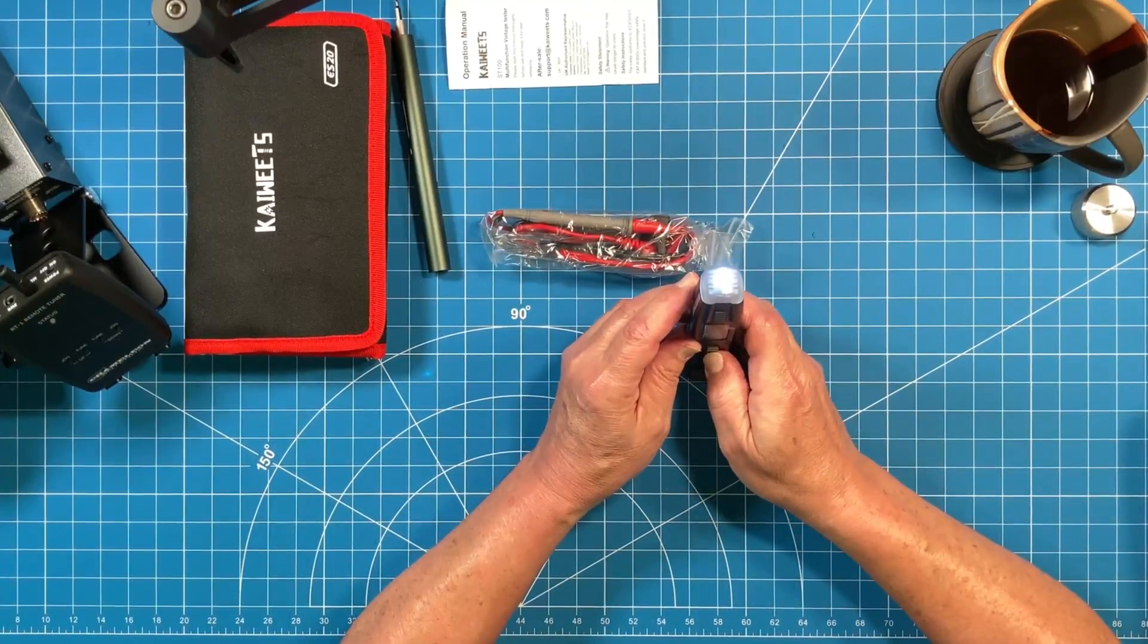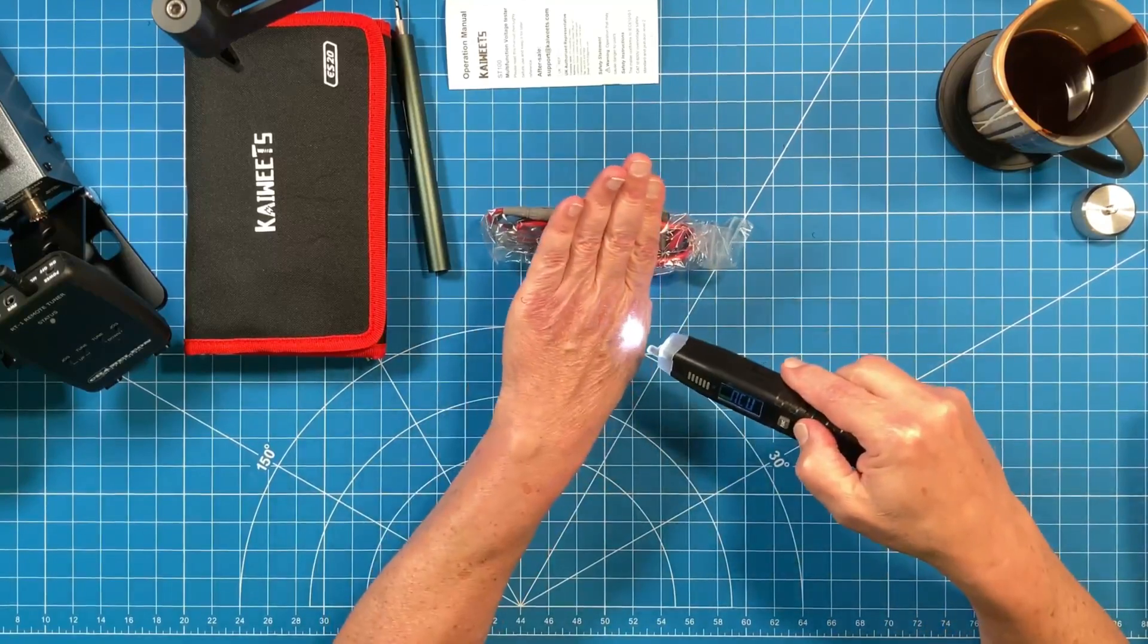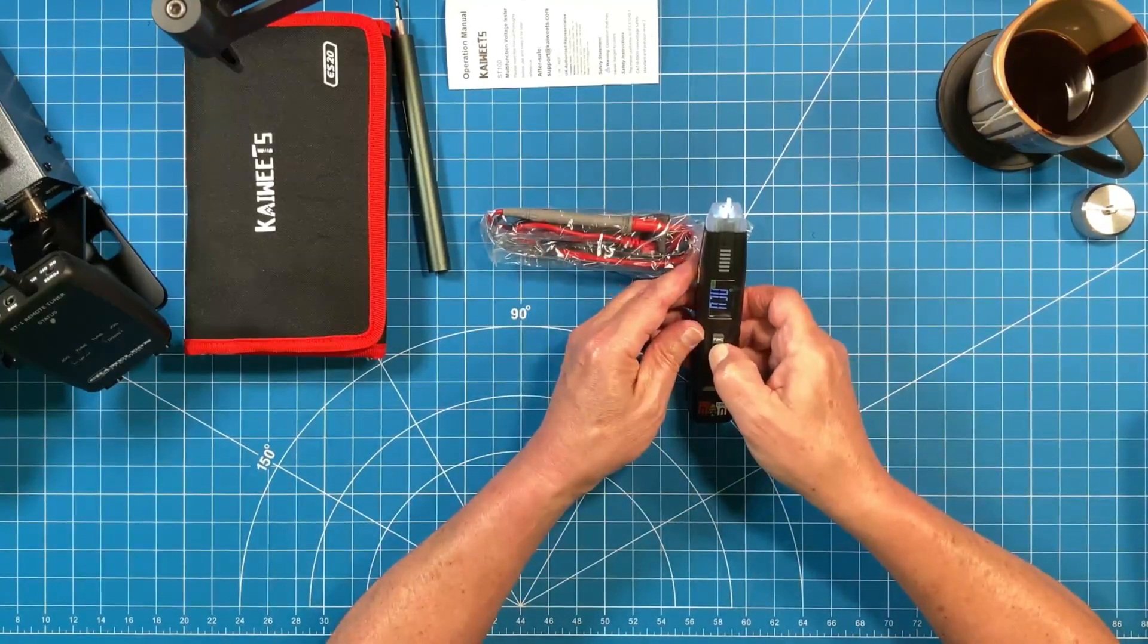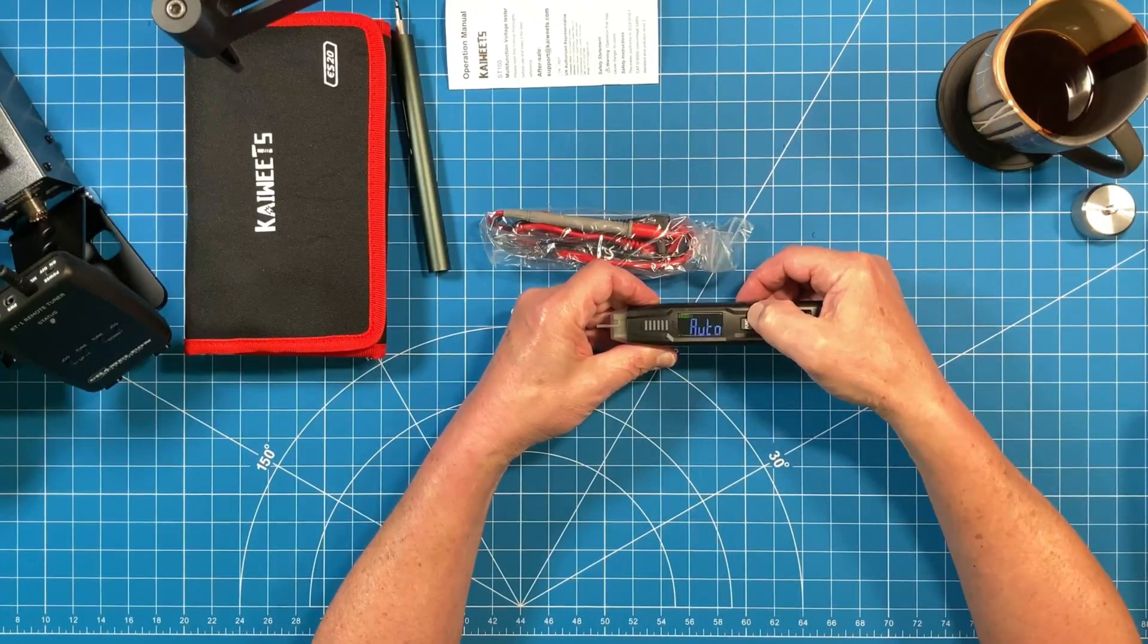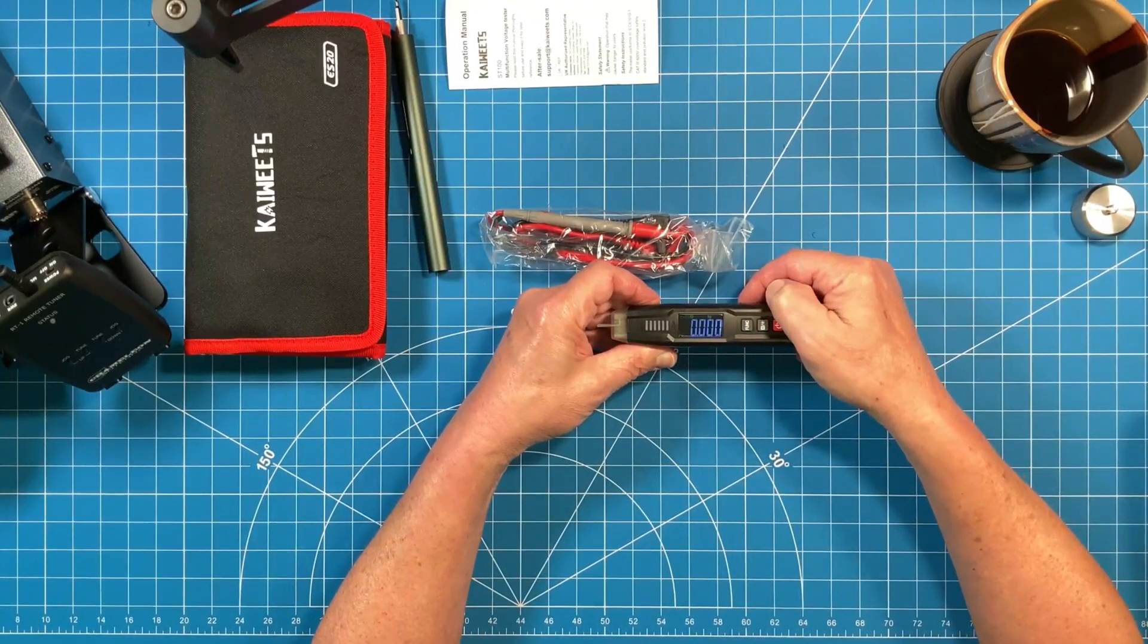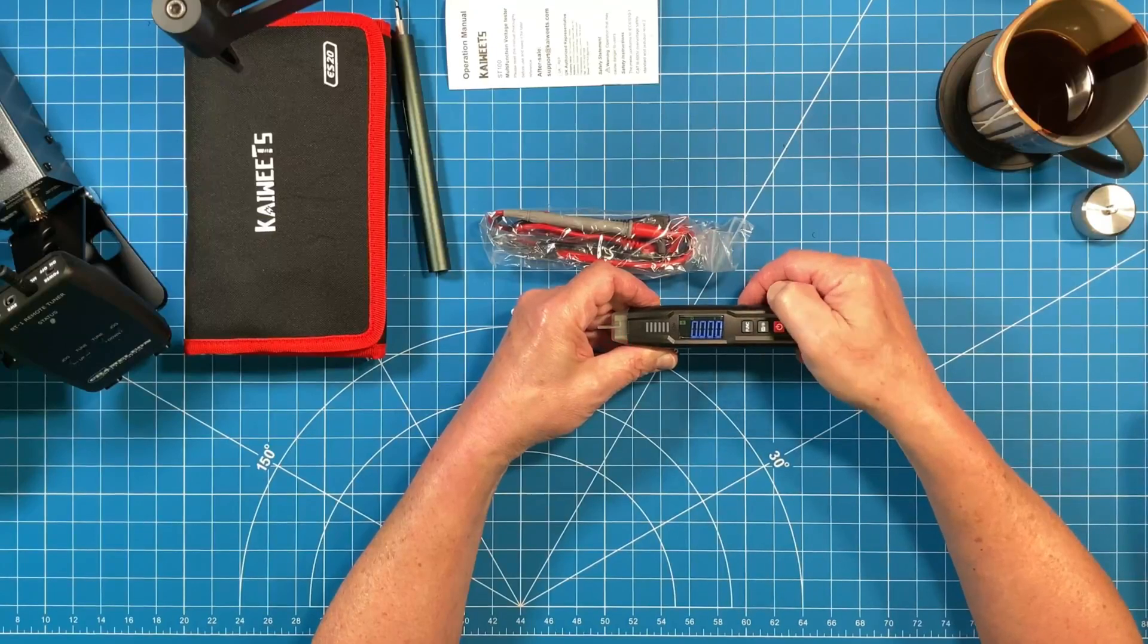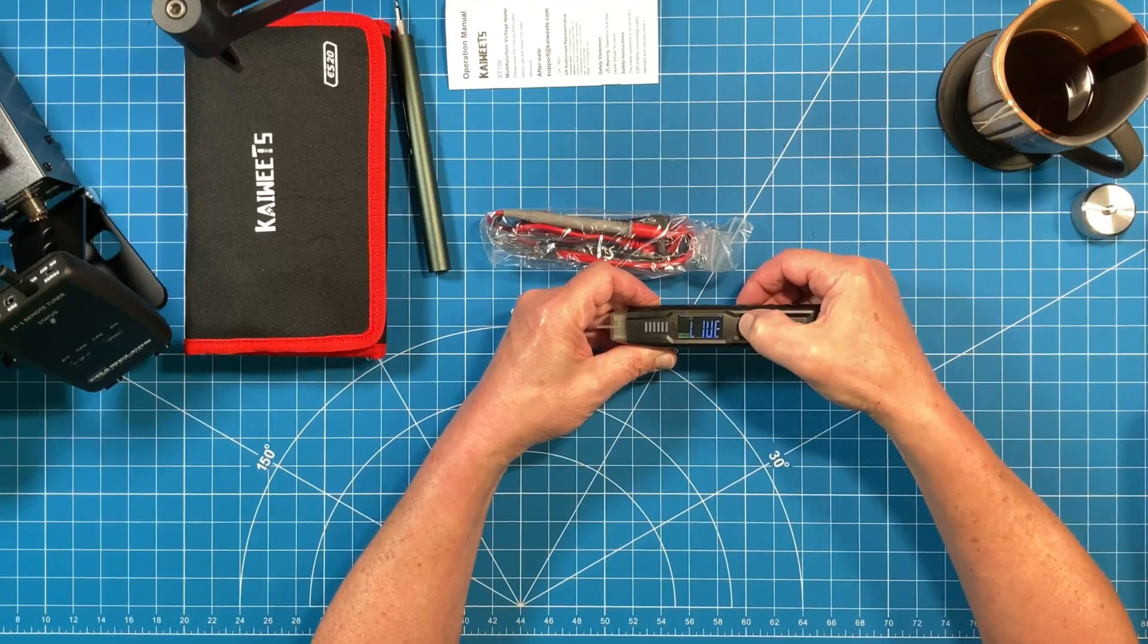The unit has a flashlight by holding and pressing the light button for an extended period of time. And why not? We have flashlights on our Baofeng UV-5Rs. Why not have a flashlight on our multimeter? From here you can cycle through all the various functions that this multimeter will perform.